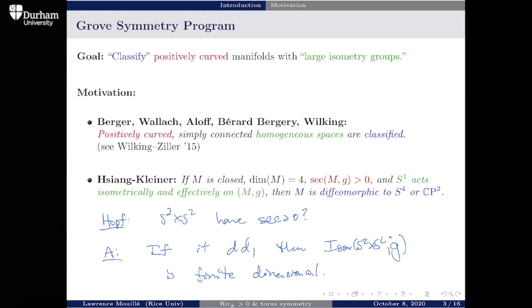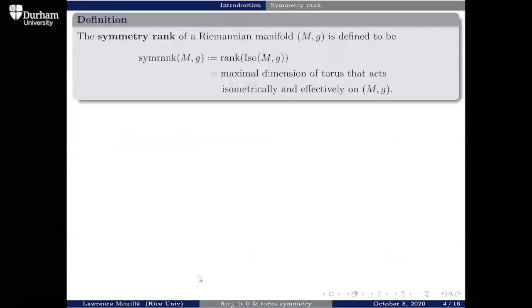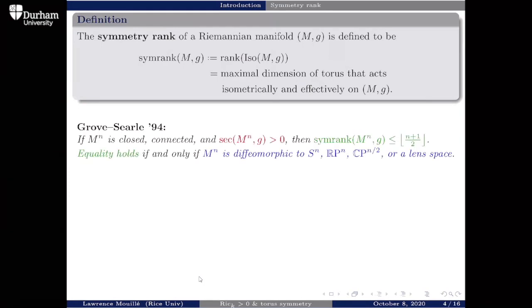This motivated Karsten to investigate problems like this. One notion of large isometry group is that the rank of the isometry group is large. We call that the symmetry rank for our Riemannian manifold — the symmetry rank is the rank of the isometry group, which can be thought of as the maximal dimension of a torus that acts isometrically and effectively on our manifold.